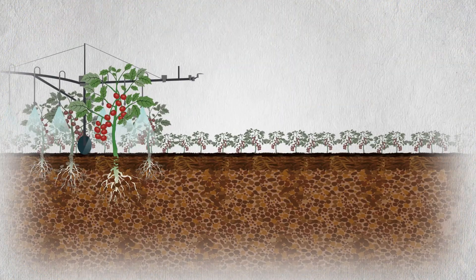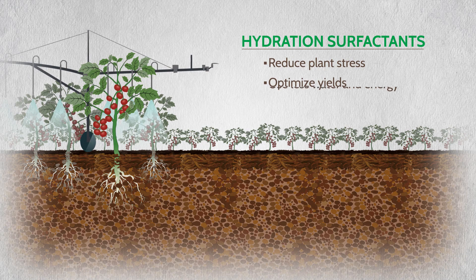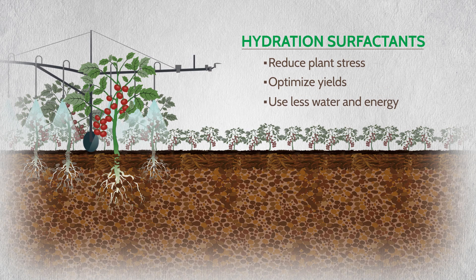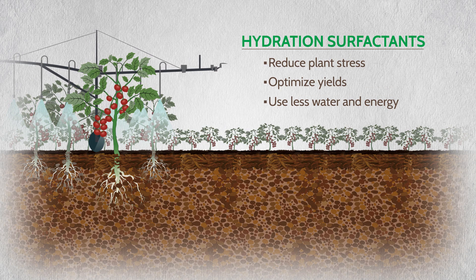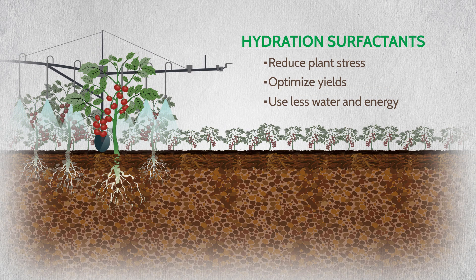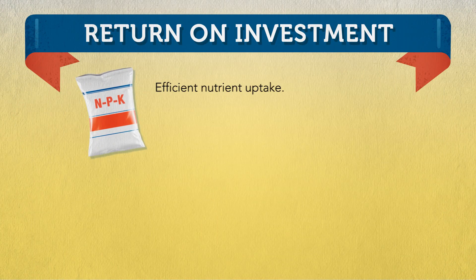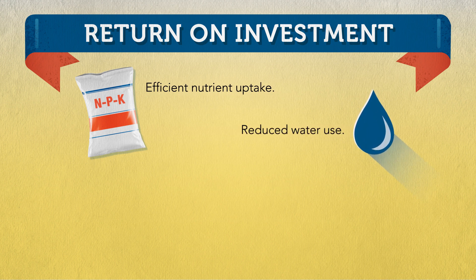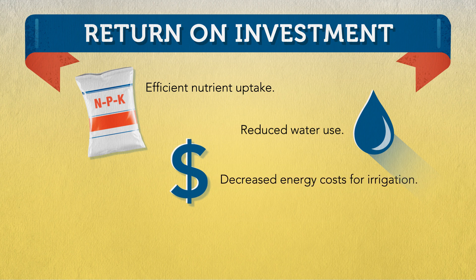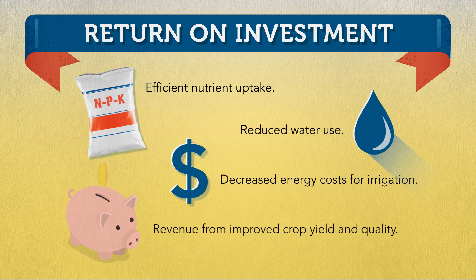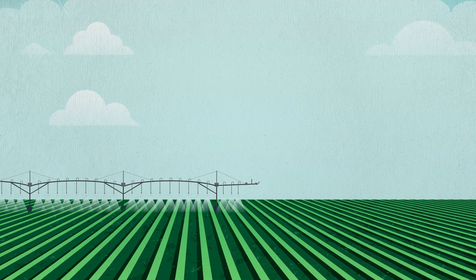Crops grown on soils treated with hydration surfactants experience less stress and optimized yields, while using less water and the energy required to pump it. Irrigation chemistries have a great return on investment, such as efficient nutrient uptake, reduced water use, decreased energy costs for irrigation, and revenue from improved crop yield and quality.